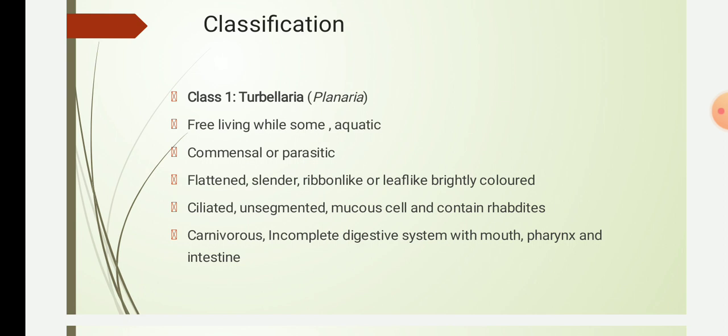Some turbellarians can be in a parasitic or commensal form. In commensalism, there is an association between two organisms in which one organism is benefited while the other gets no benefit but is also not harmed. In parasitism, one organism is benefited while the other organism is harmed.